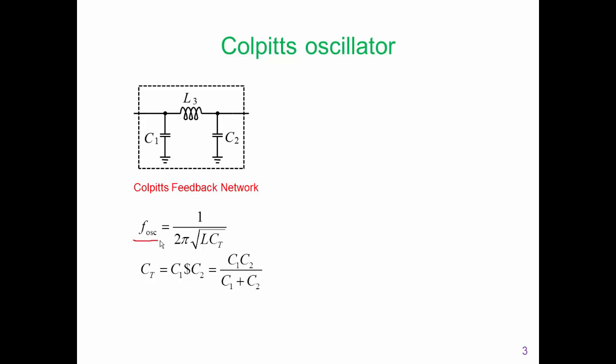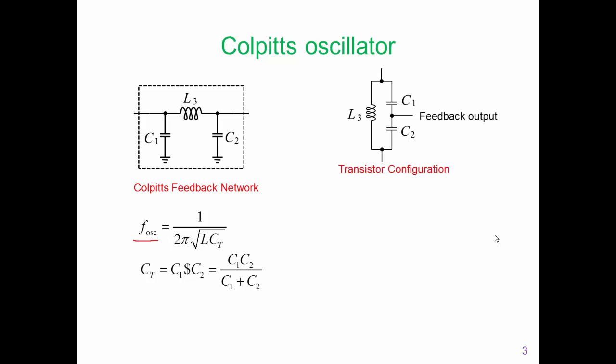That feedback network is not immediately seen with a transistor. A better way of looking at the Colpitts feedback network in a transistor configuration is shown on the top right. What we have is the output from our active device is across L3, and then there's a feedback point — such as into the base of an amplifier — that is between C1 and C2. The key thing is that C1 and C2 charge up through part of the cycle and then discharge through L3. L3 is intrinsic to our feedback path, connected to the output to ground, or between the output of a transistor and the input of the transistor.